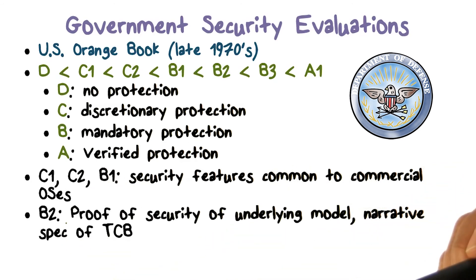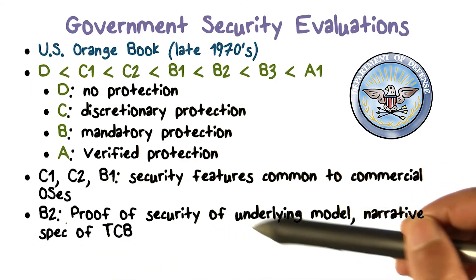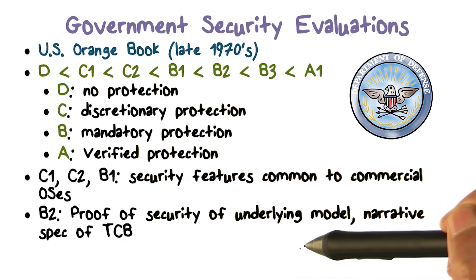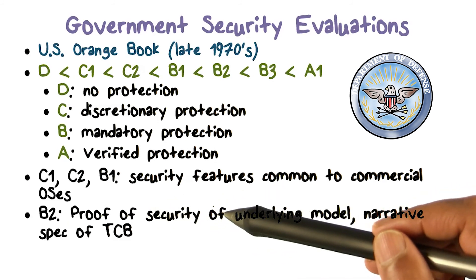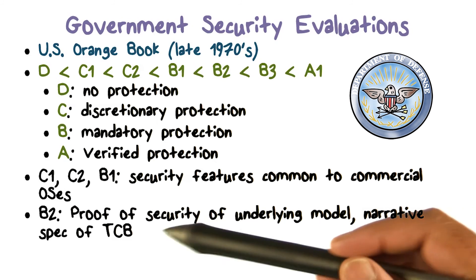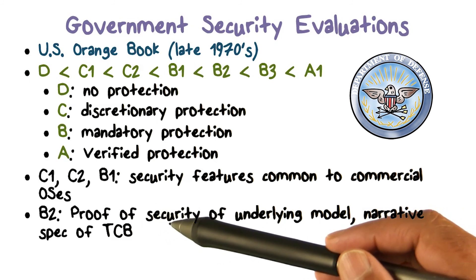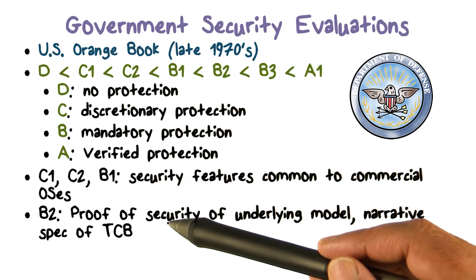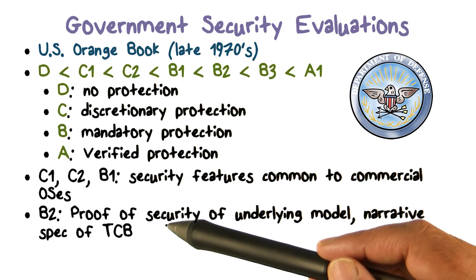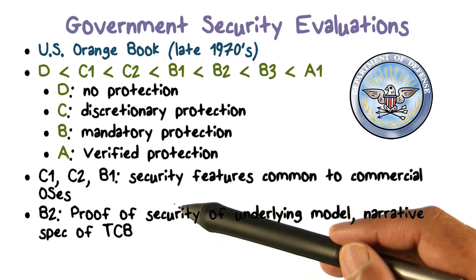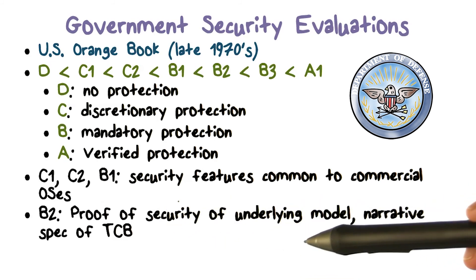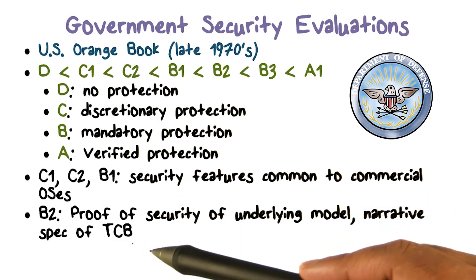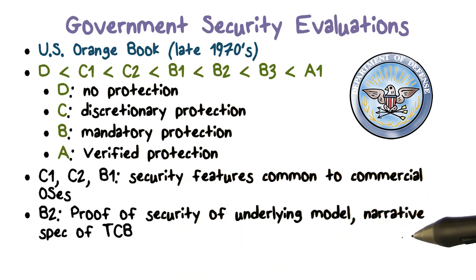If you want to move up to B2, you have to have a proof of correctness for the security model that underlies your system. You also have to have a specification for the TCB. It doesn't have to be formally done, but you need a narrative specification of the TCB and what it does.